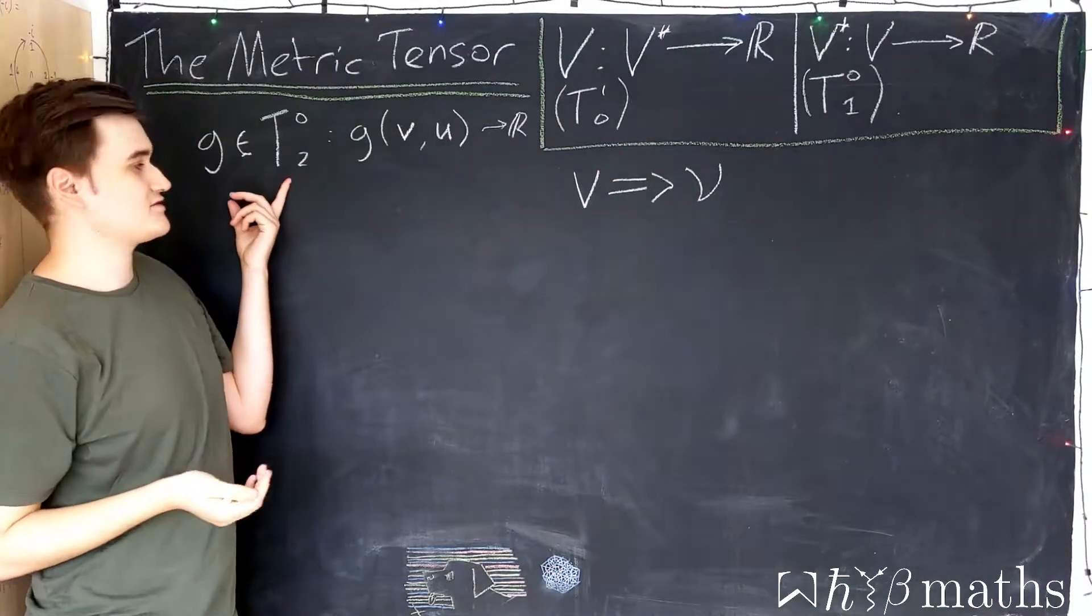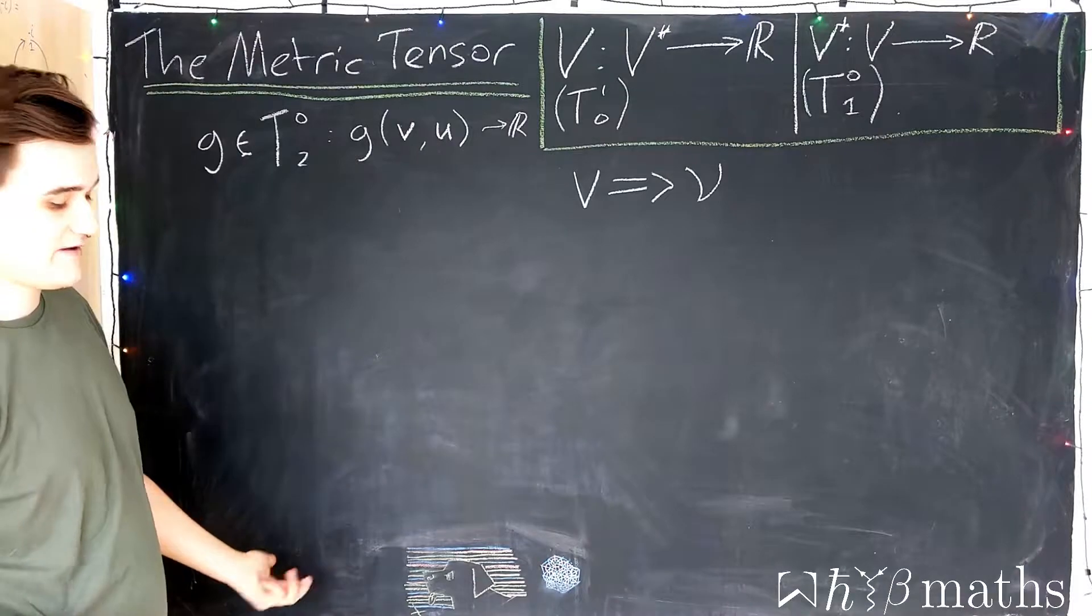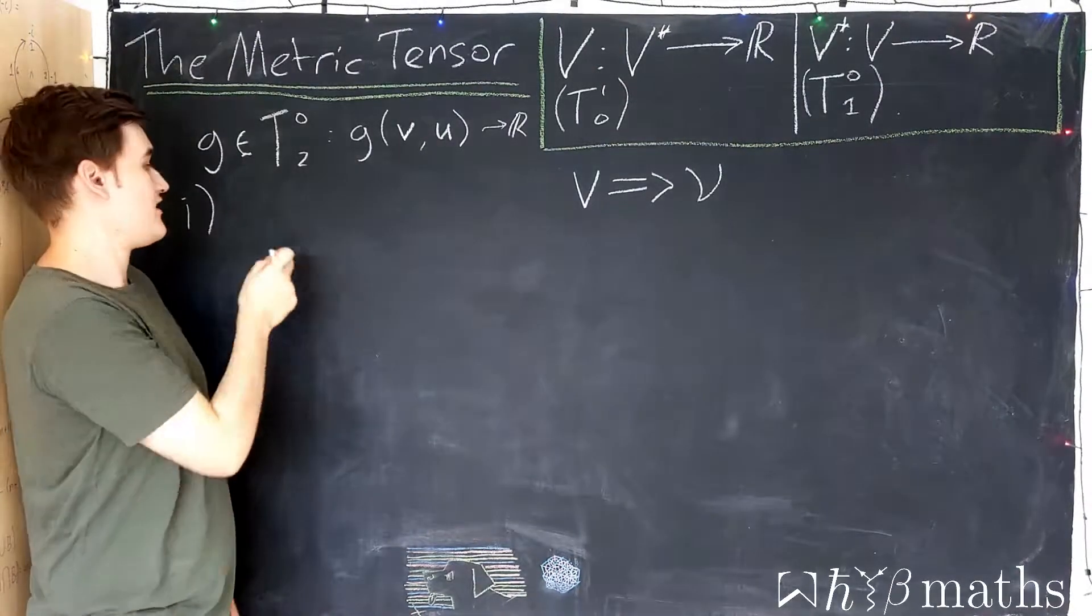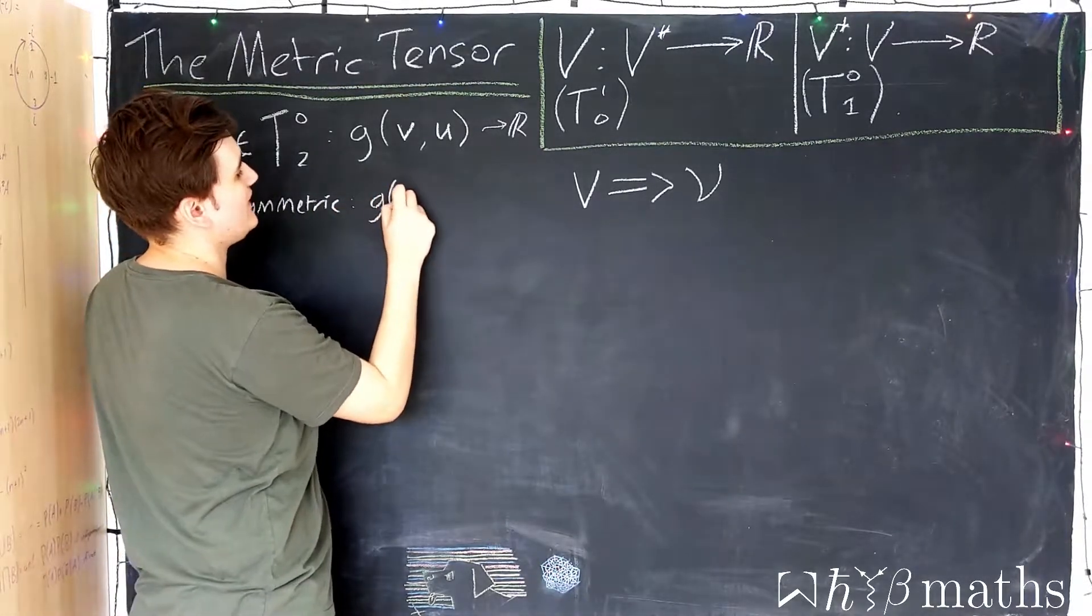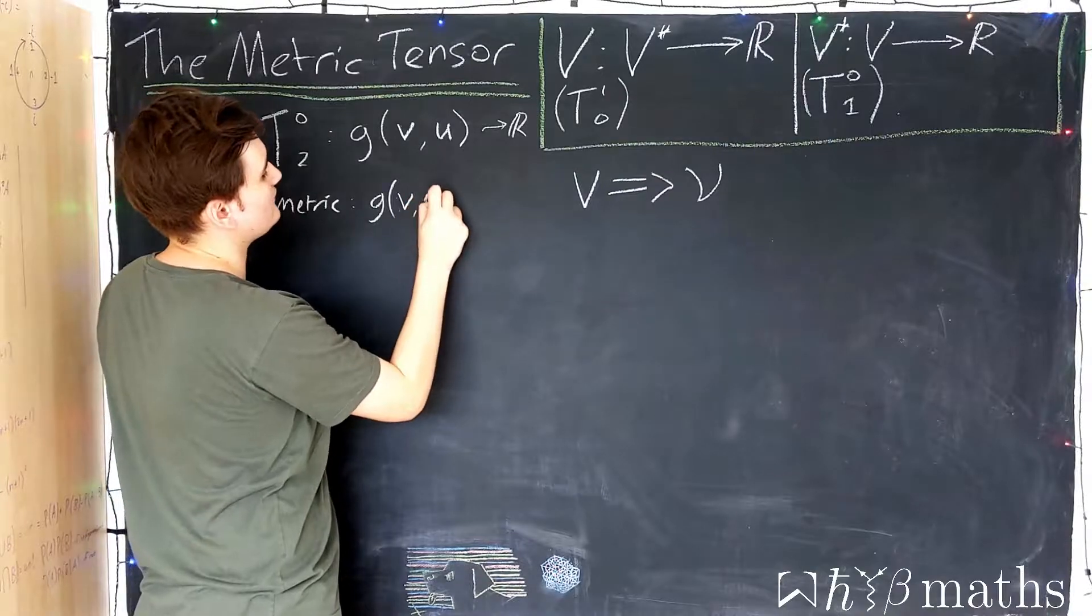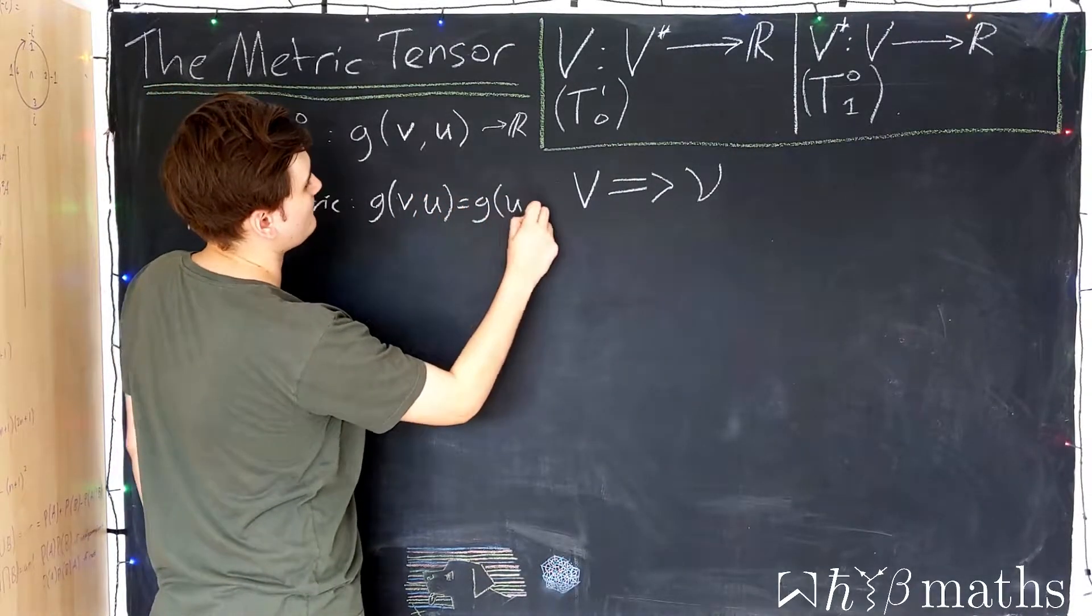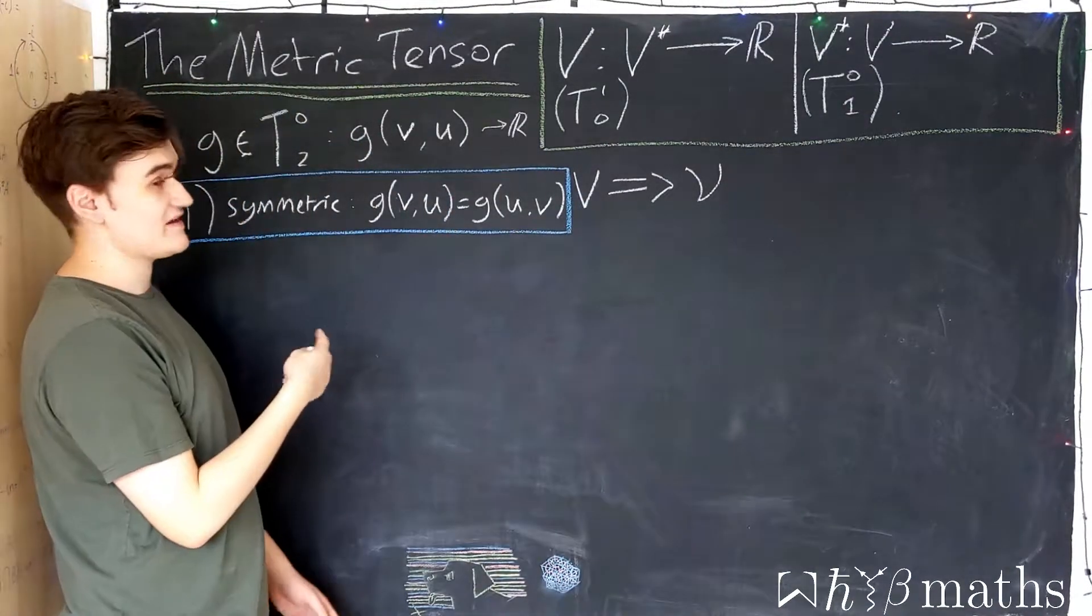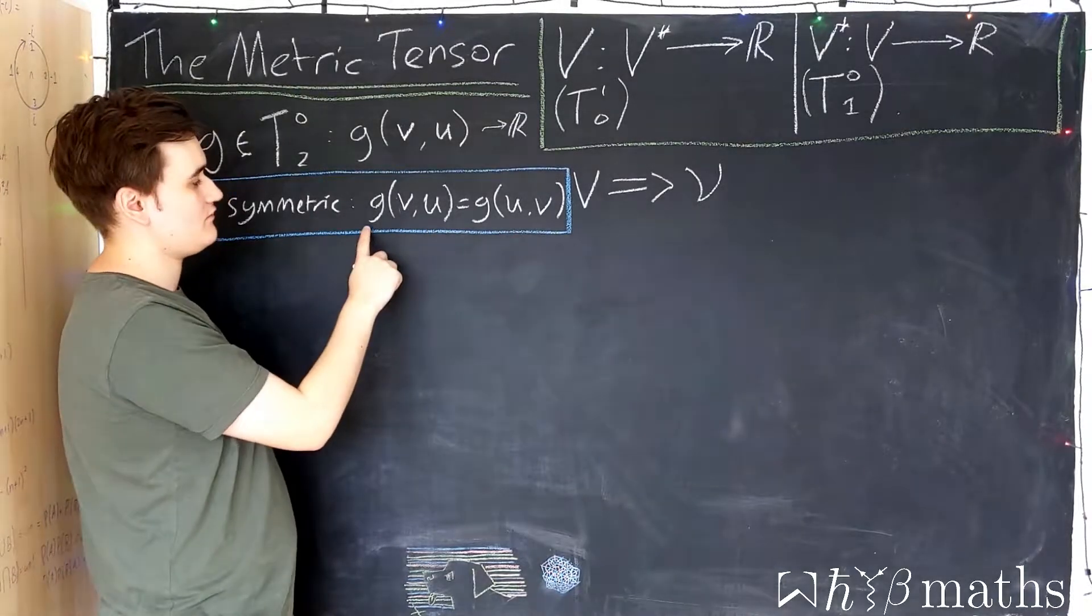This isn't just any (0,2) tensor - it has to satisfy a few properties in order to make it useful, namely that it must be symmetric, which simply means that if we plug in two vectors, it doesn't matter which slot they go in, we just get the same result.